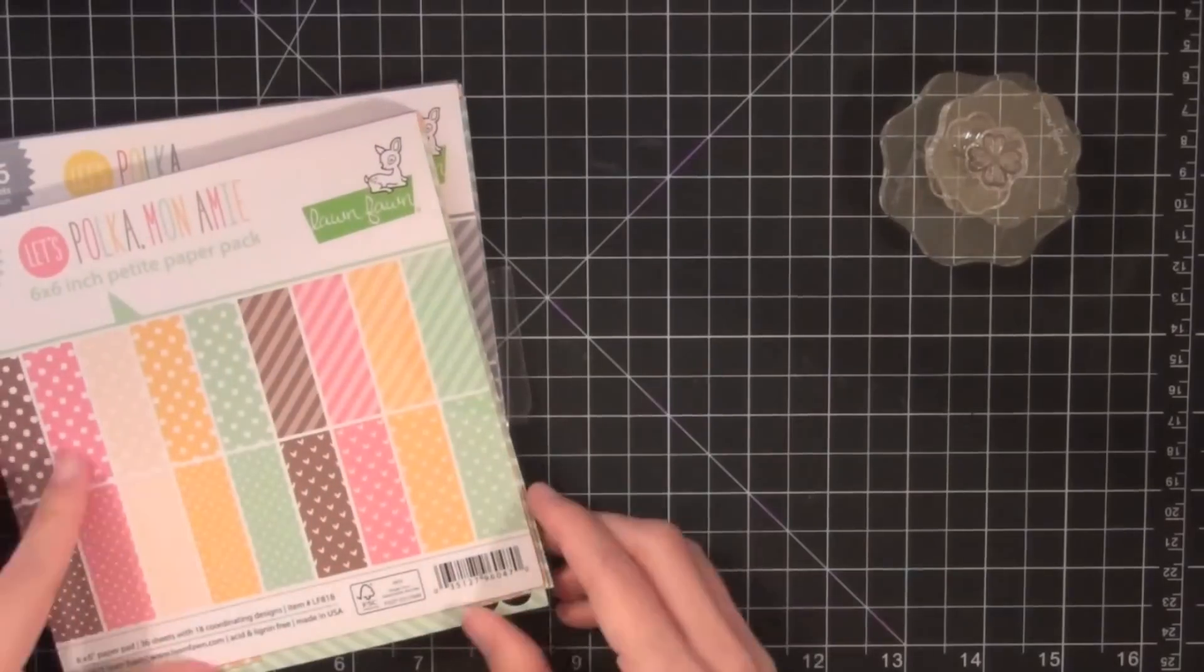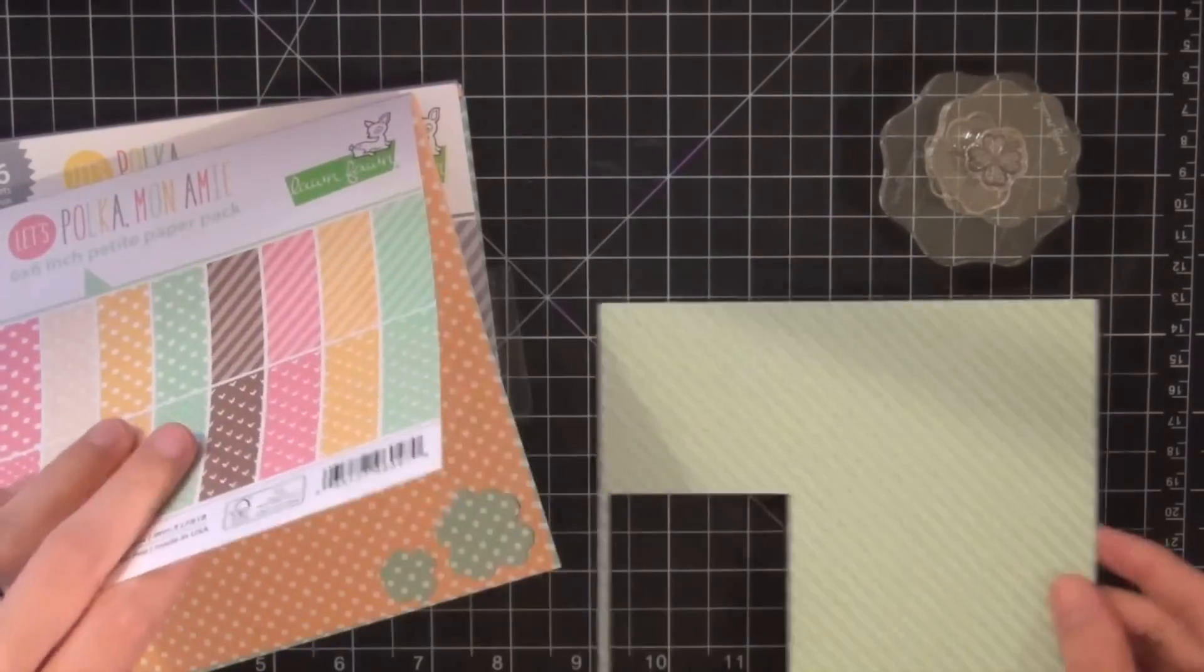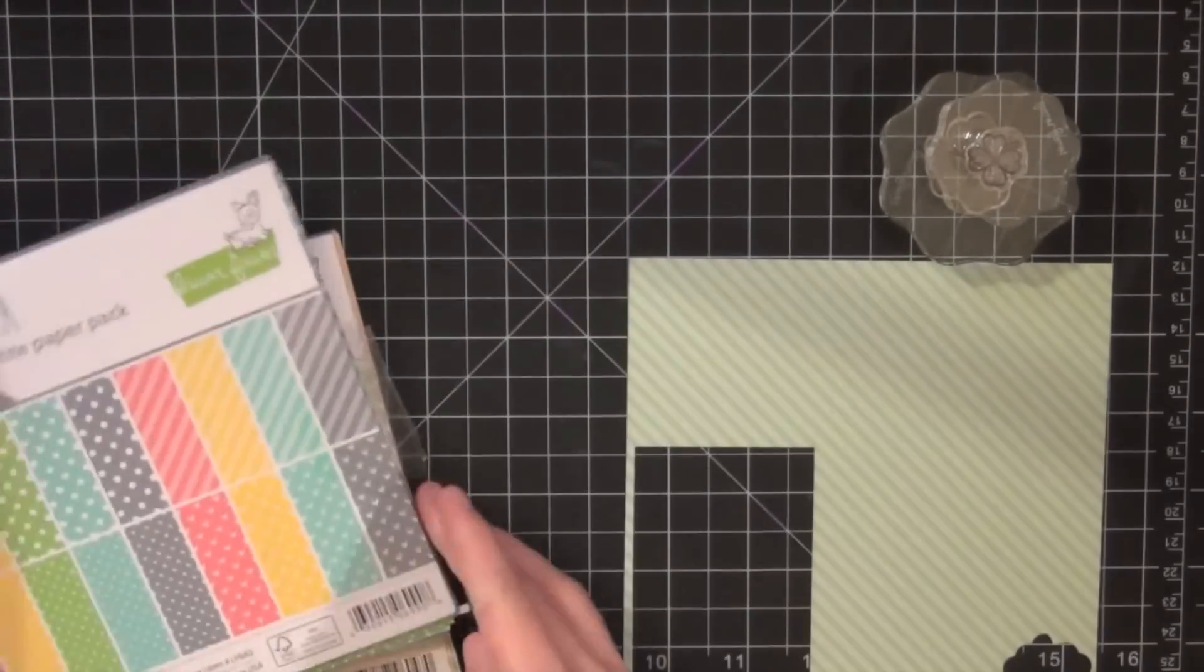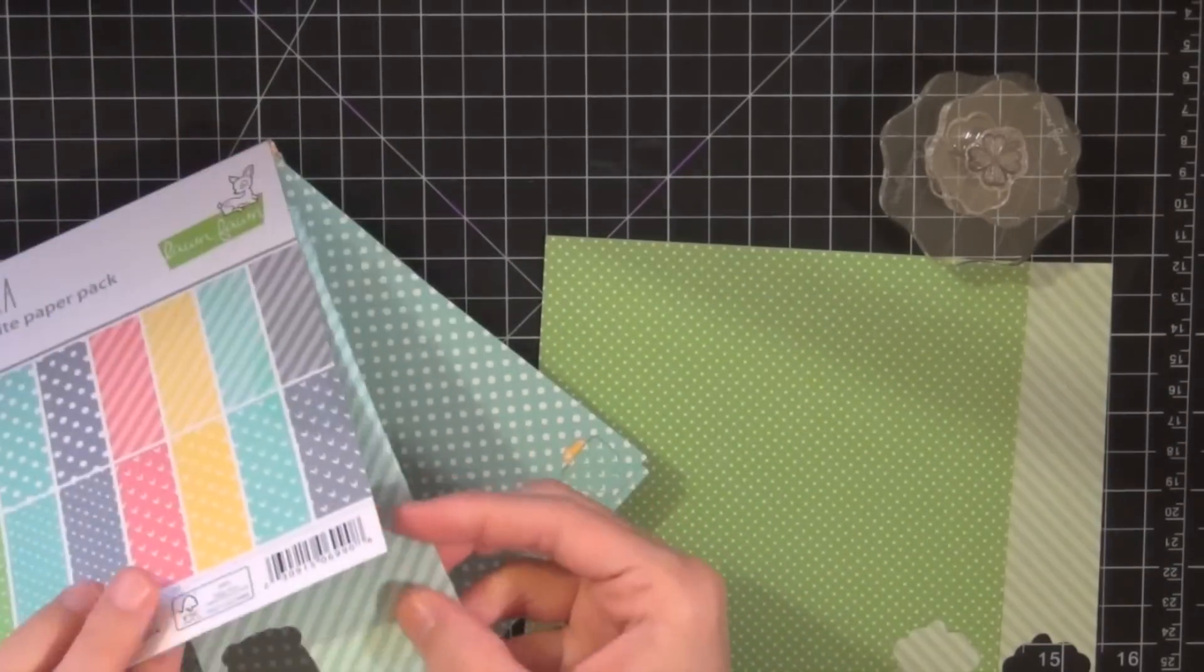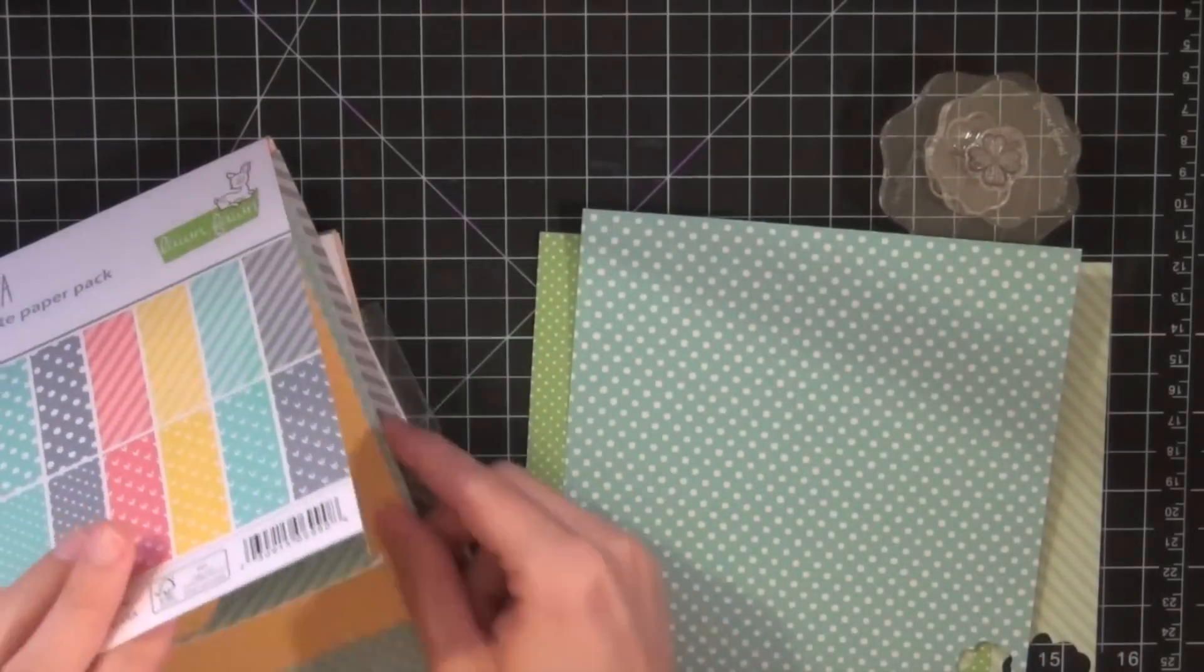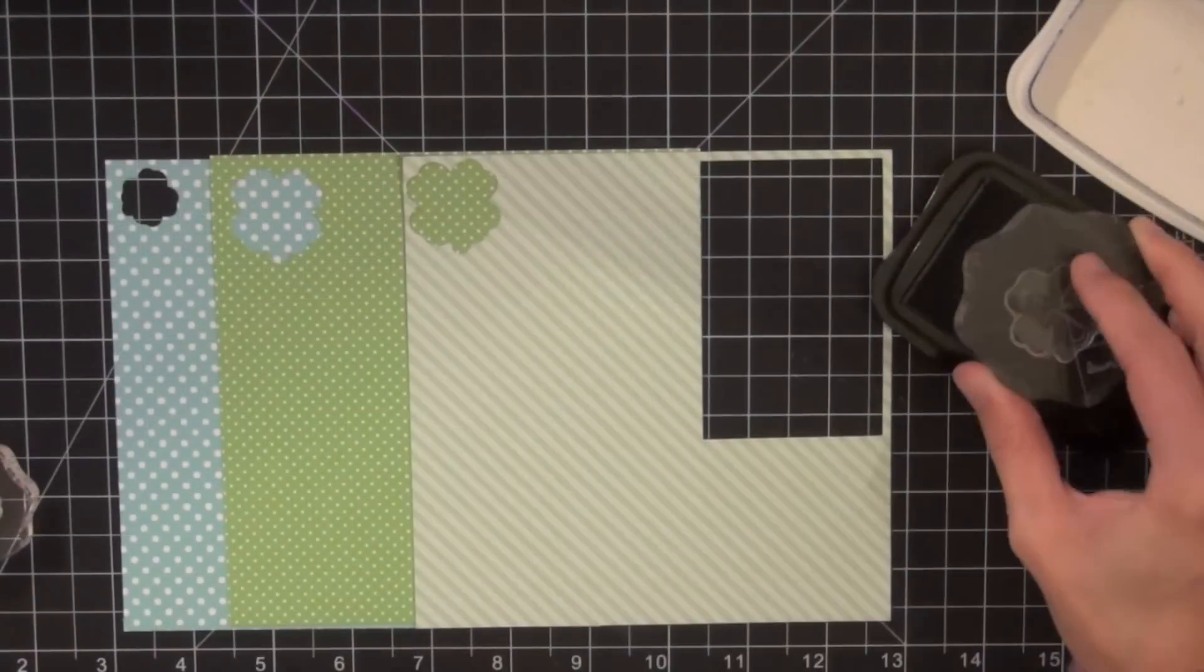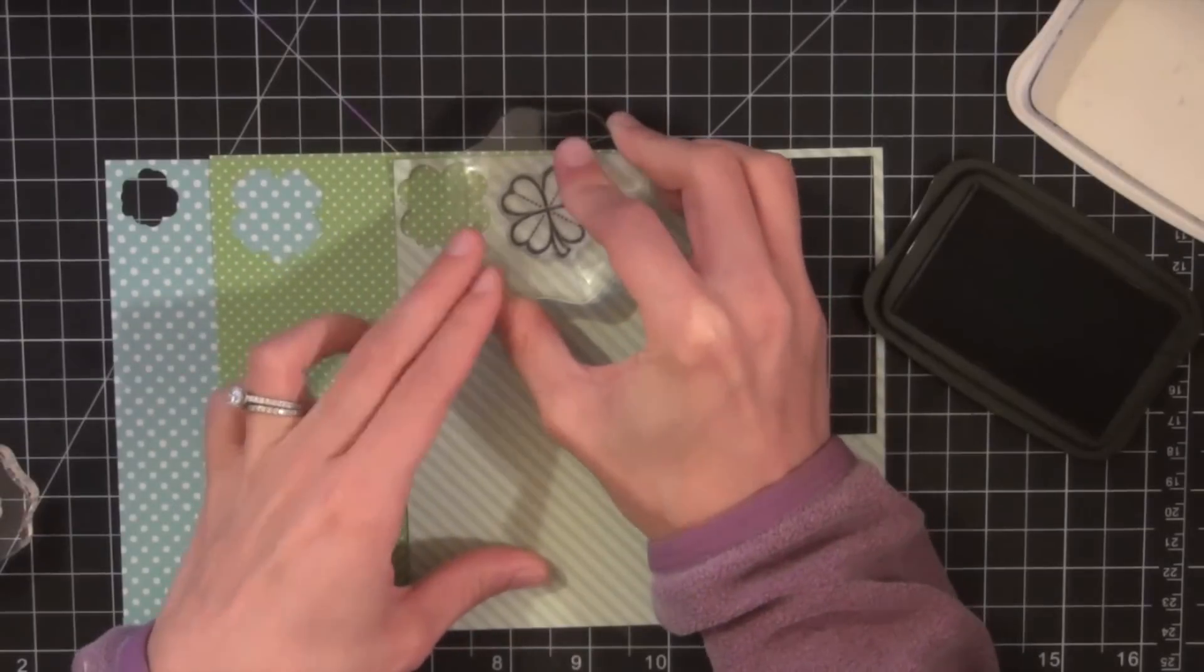So in order to make that bouquet I'm going to pick out several pieces of patterned paper from each paper pack, some blues and some greens.